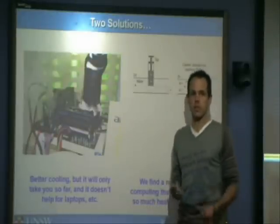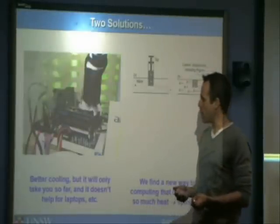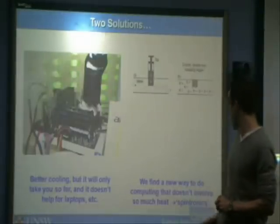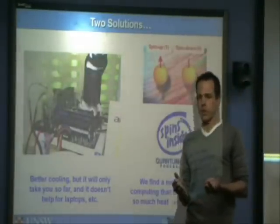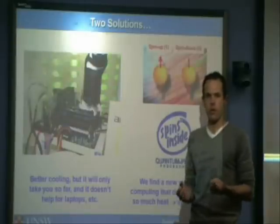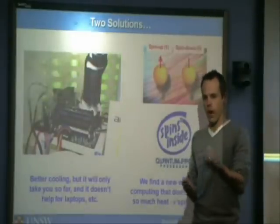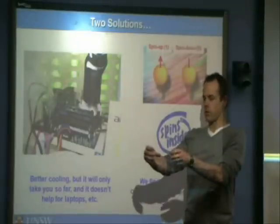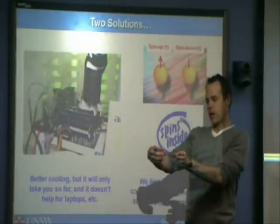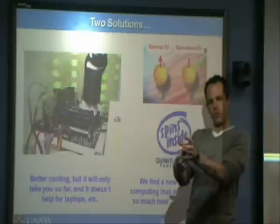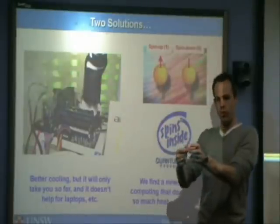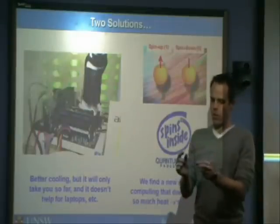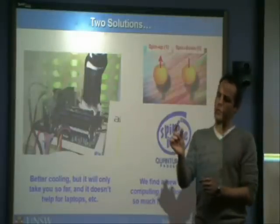The approach we're taking is to completely redesign the transistor in the hope of overcoming this heating problem. One way we want to do this is to use a different property of the electron in order to encode our ones and zeros. At the moment, a zero and a one is represented by electrons either flowing through or not flowing through. When they're flowing through, they're producing heat — and that's our problem.